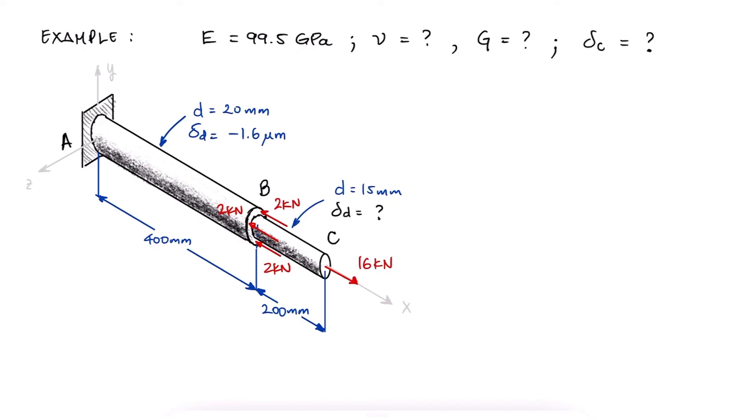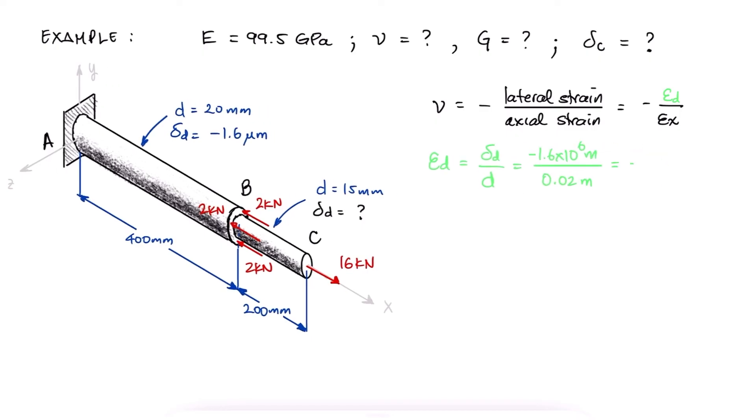The first question refers to the Poisson's ratio, which we know is the negative of the lateral strain over the axial strain. The lateral strain epsilon y, epsilon z, or in this case epsilon d, referring to the diameter, would be equal to the deformation over the original dimension, both in meters, and for the axial strain of that same section AB, we'd need to find the deformation delta first.